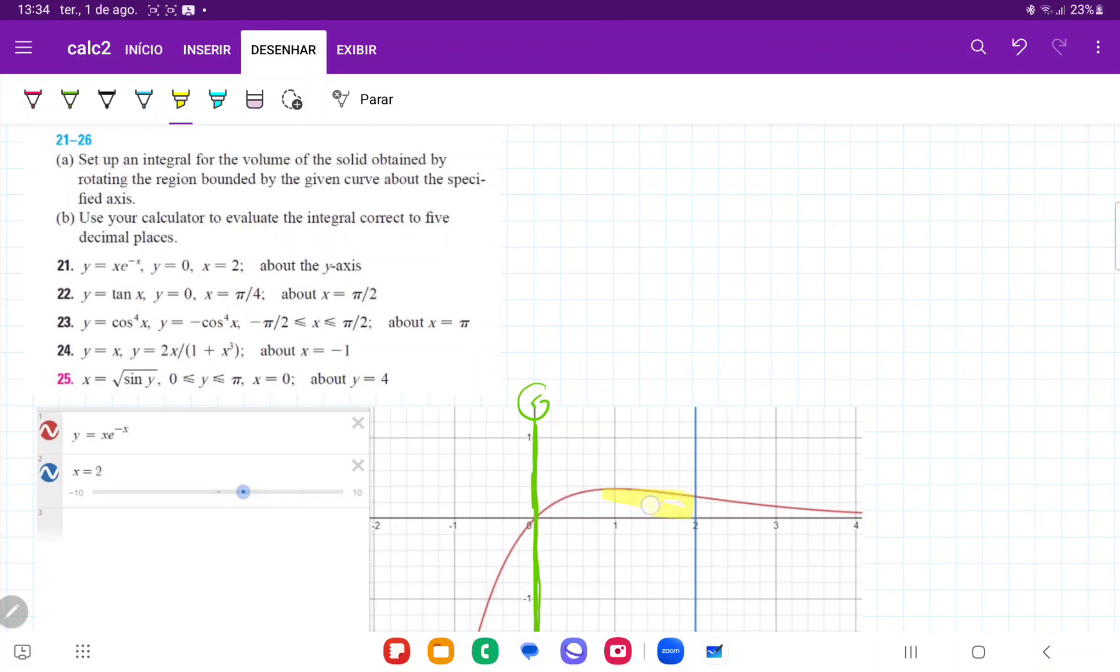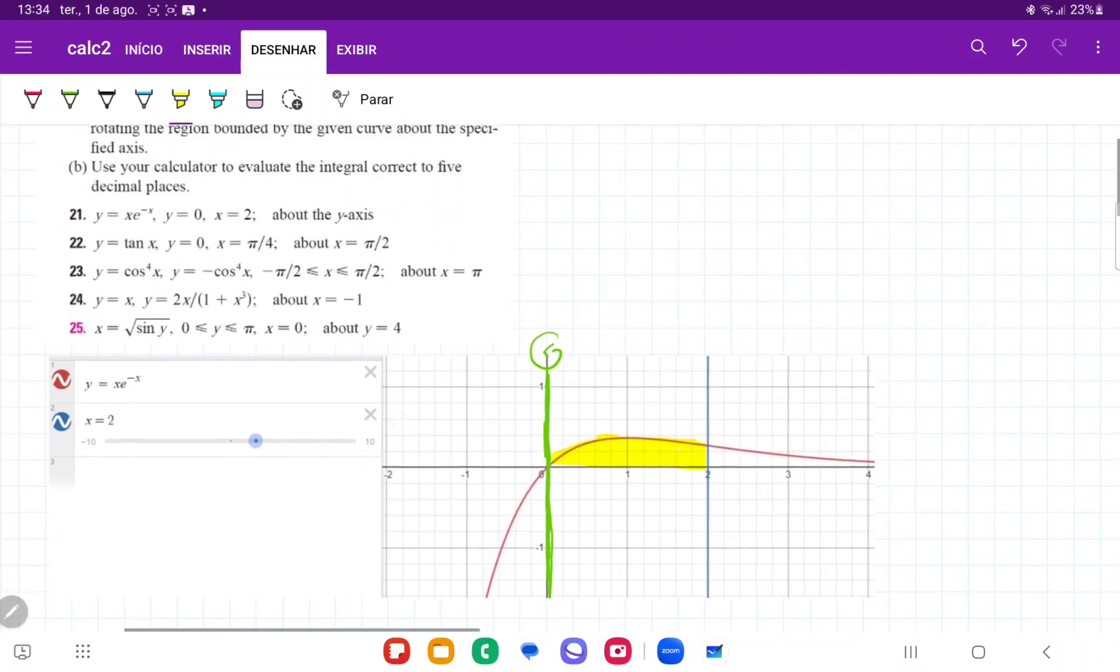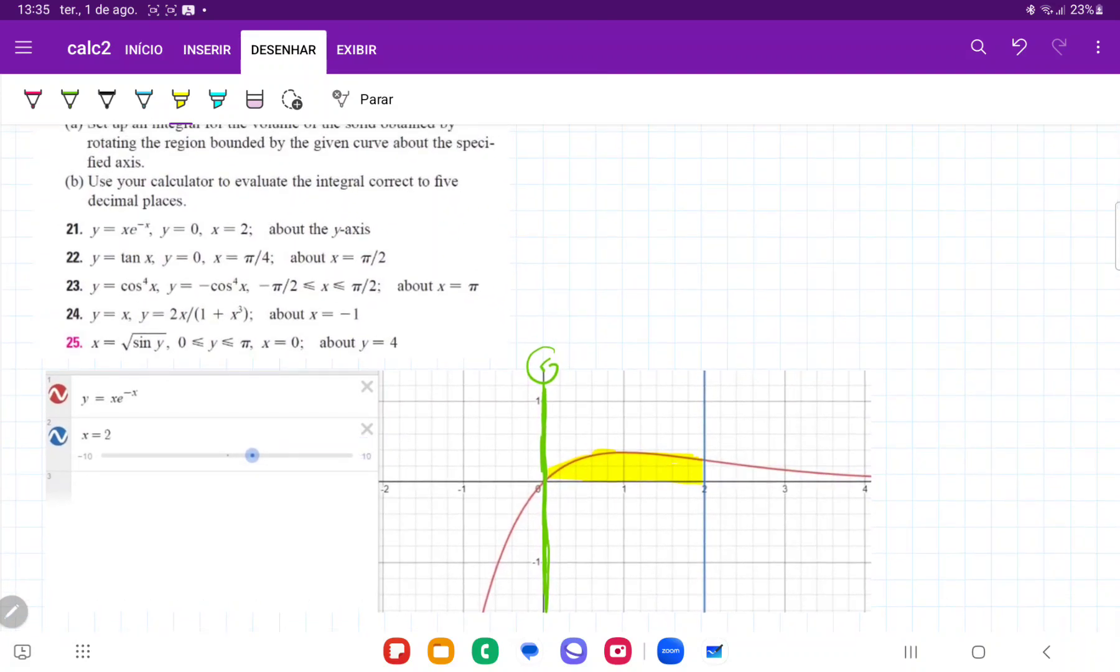We can see here that the area bounded between them is this little chunk here in yellow, and they want us to rotate it about the line, actually about the y-axis.